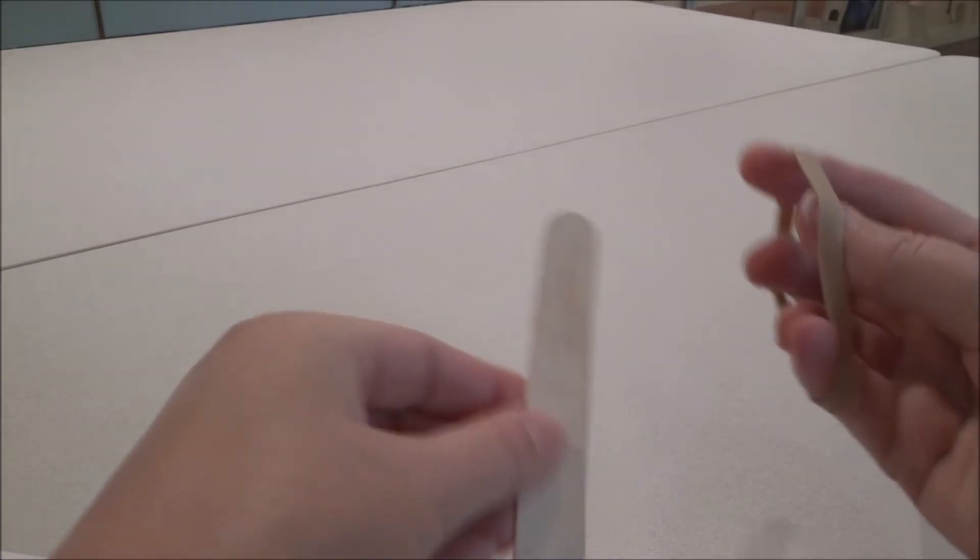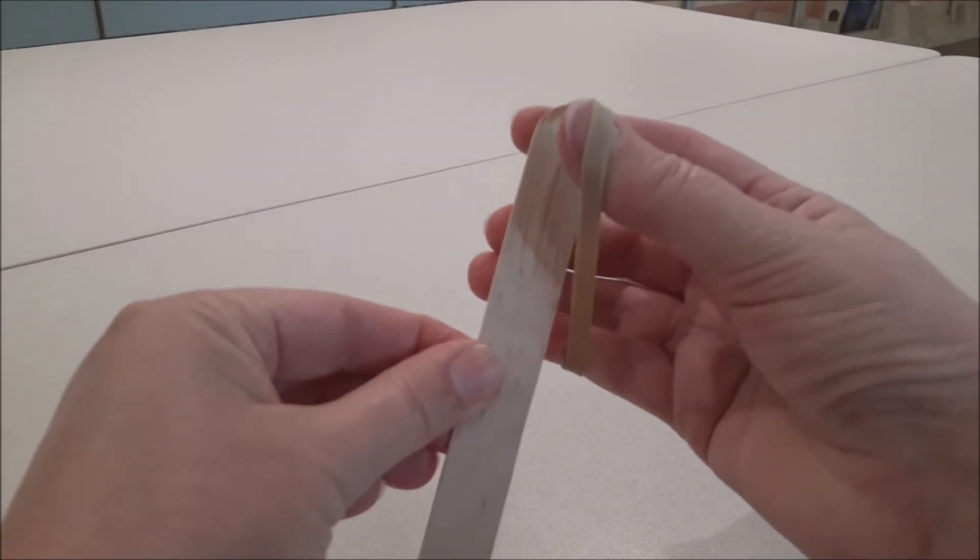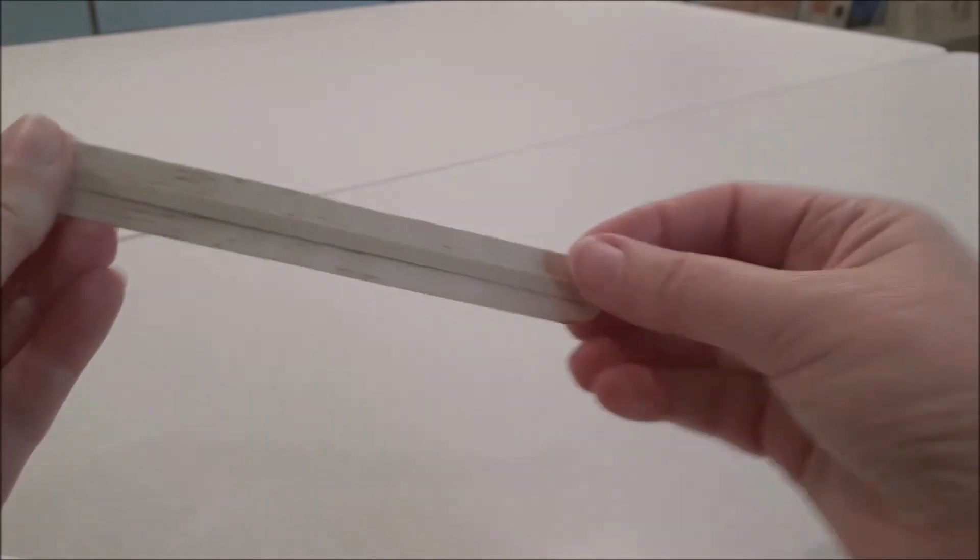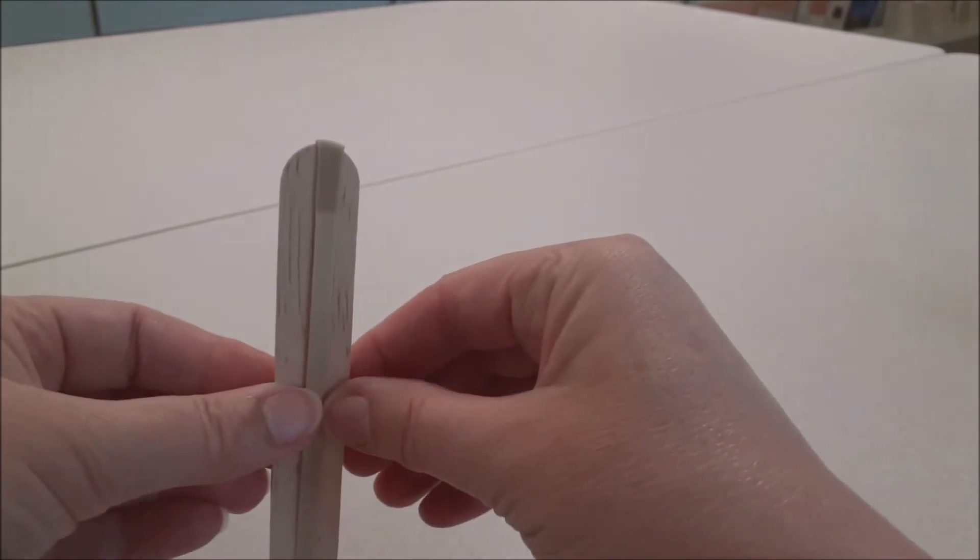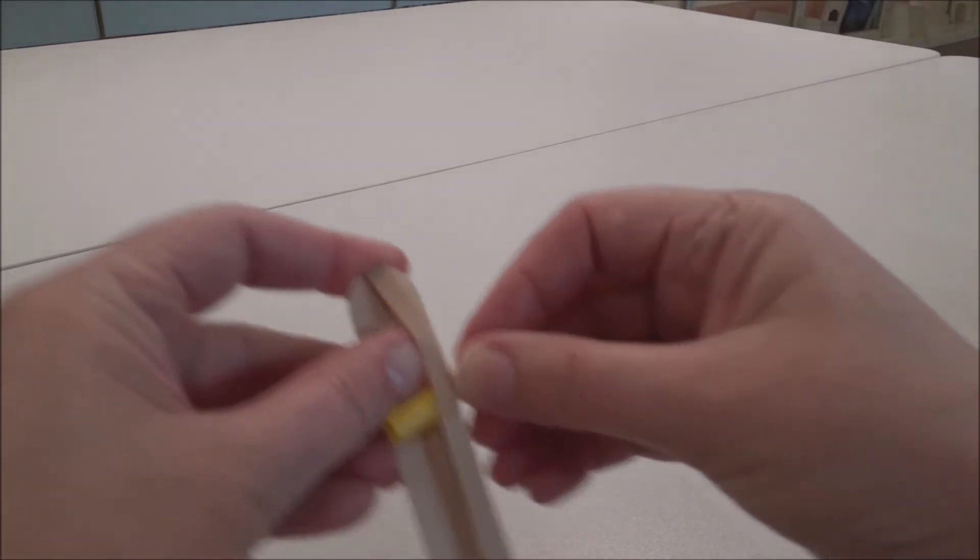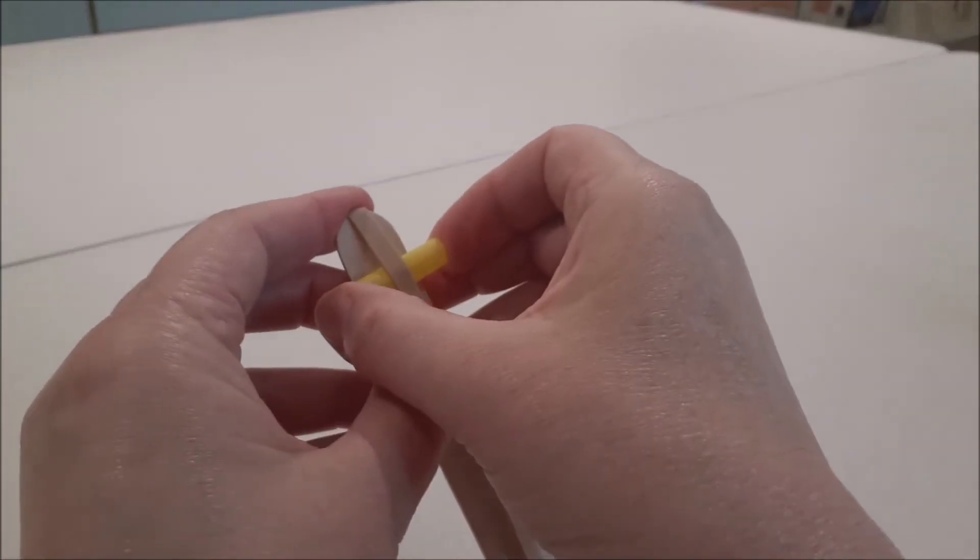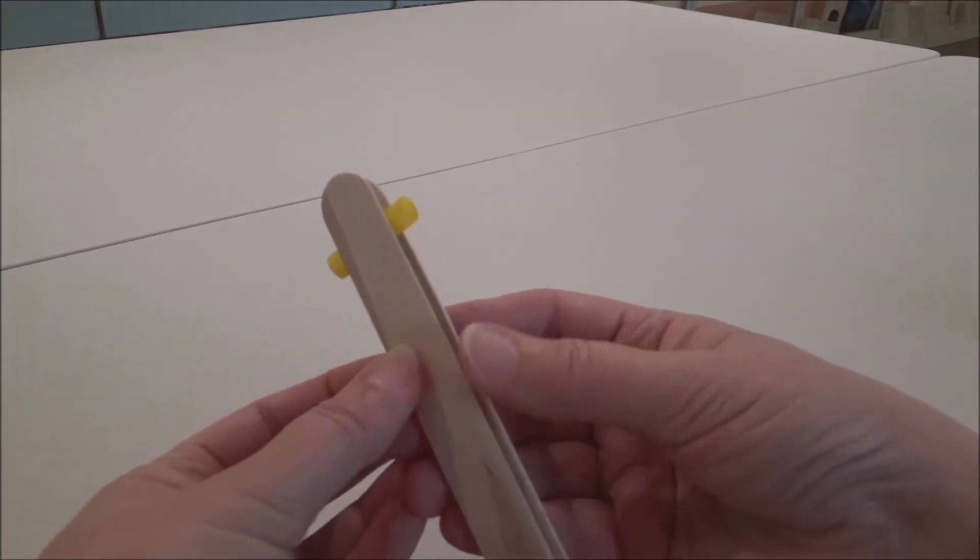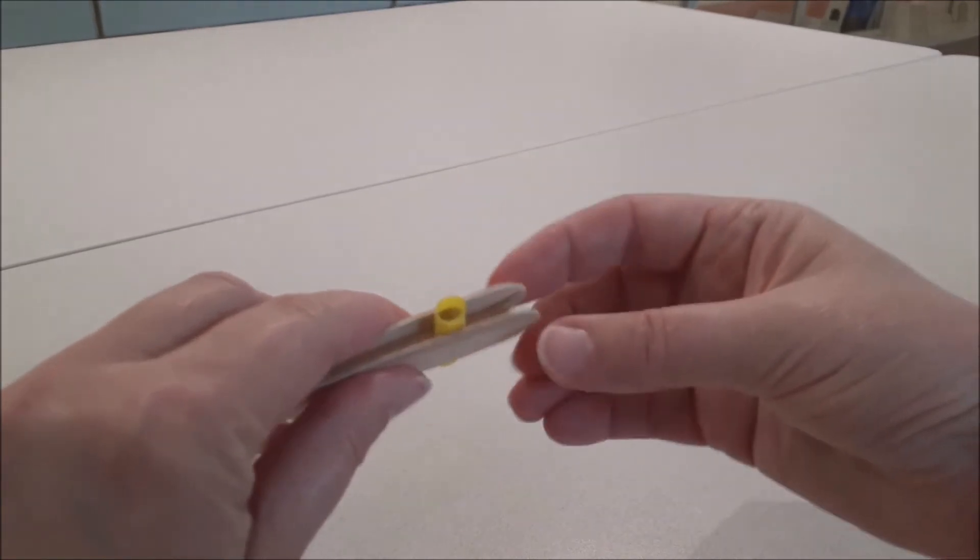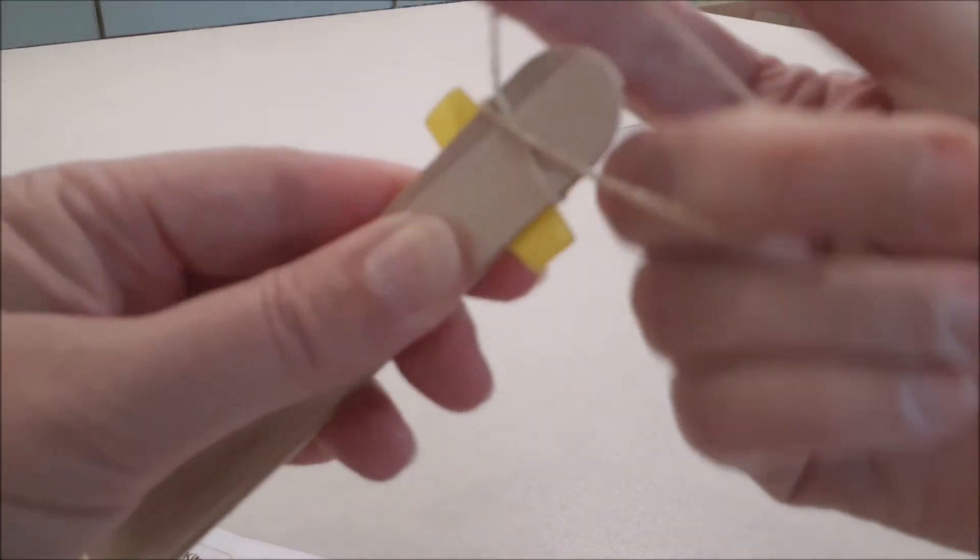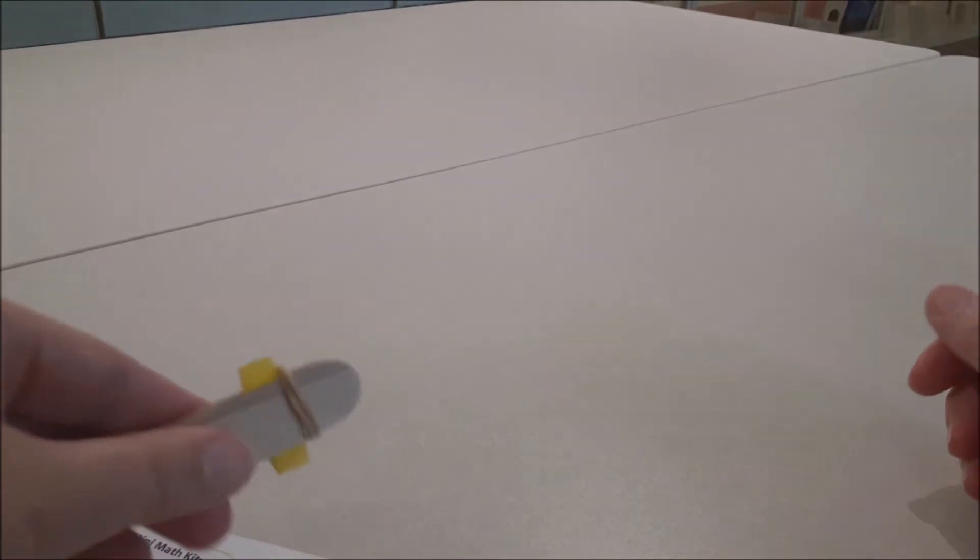You start out by taking one of your craft sticks and the large rubber band and placing it end to end on the craft stick. Just like that. You then need to place one of the straw pieces under the large rubber band and push it close to the end. Take your second craft stick, place it over the straw like that. Take one of the small rubber bands and wrap it about three times around the end like that.